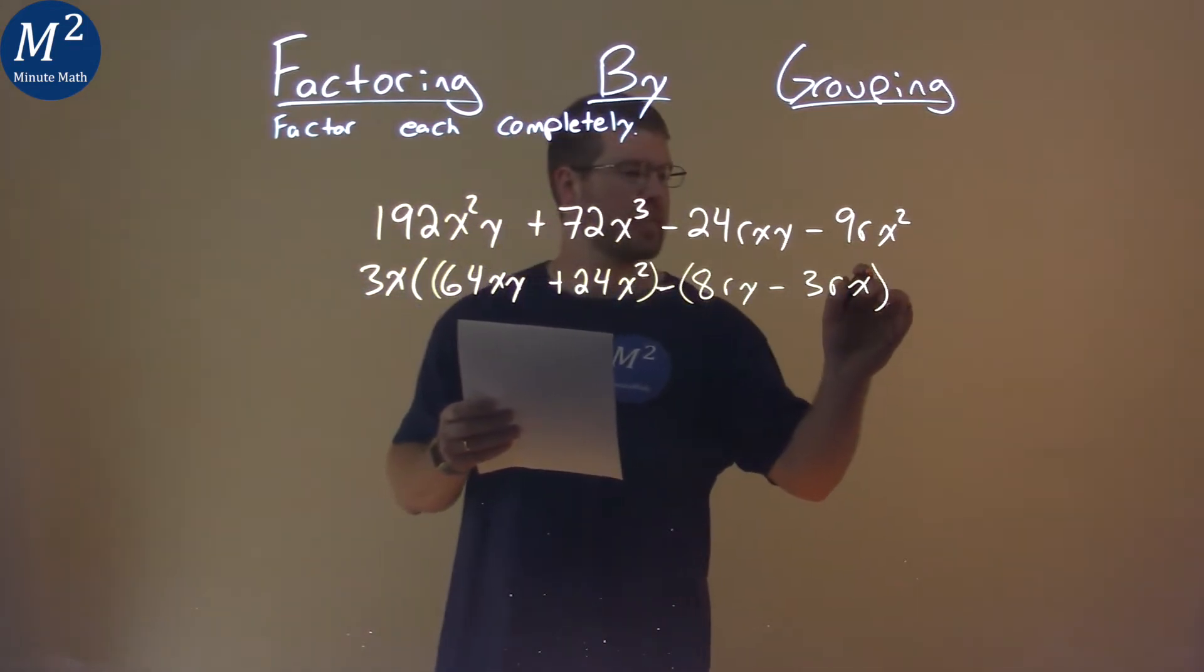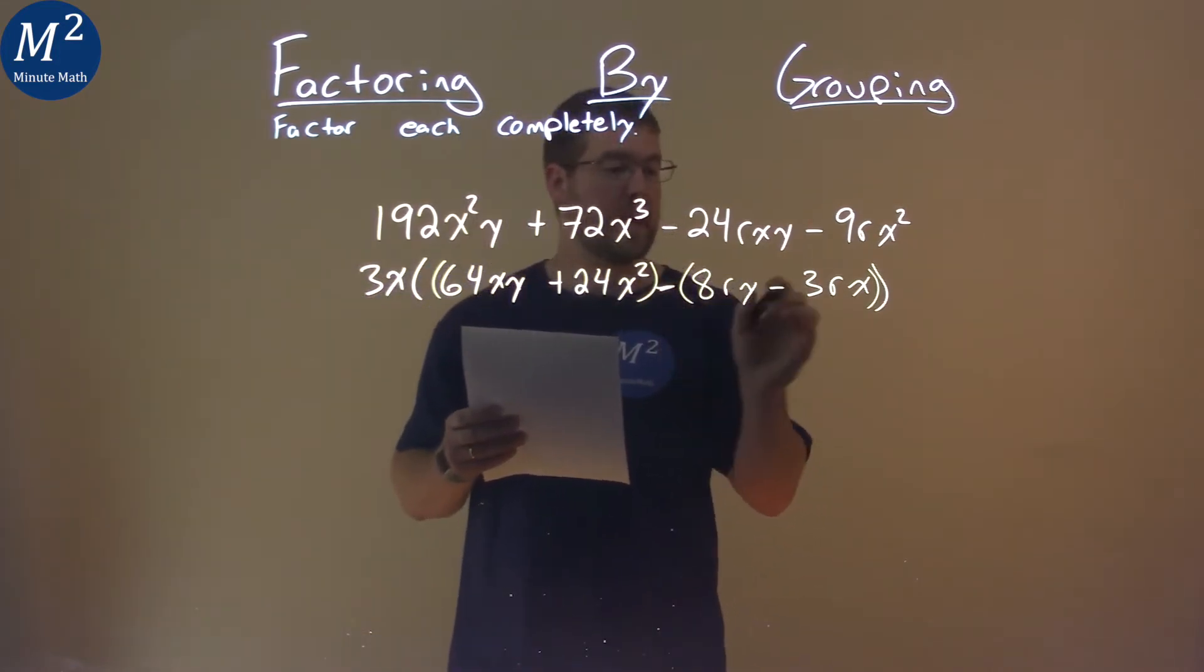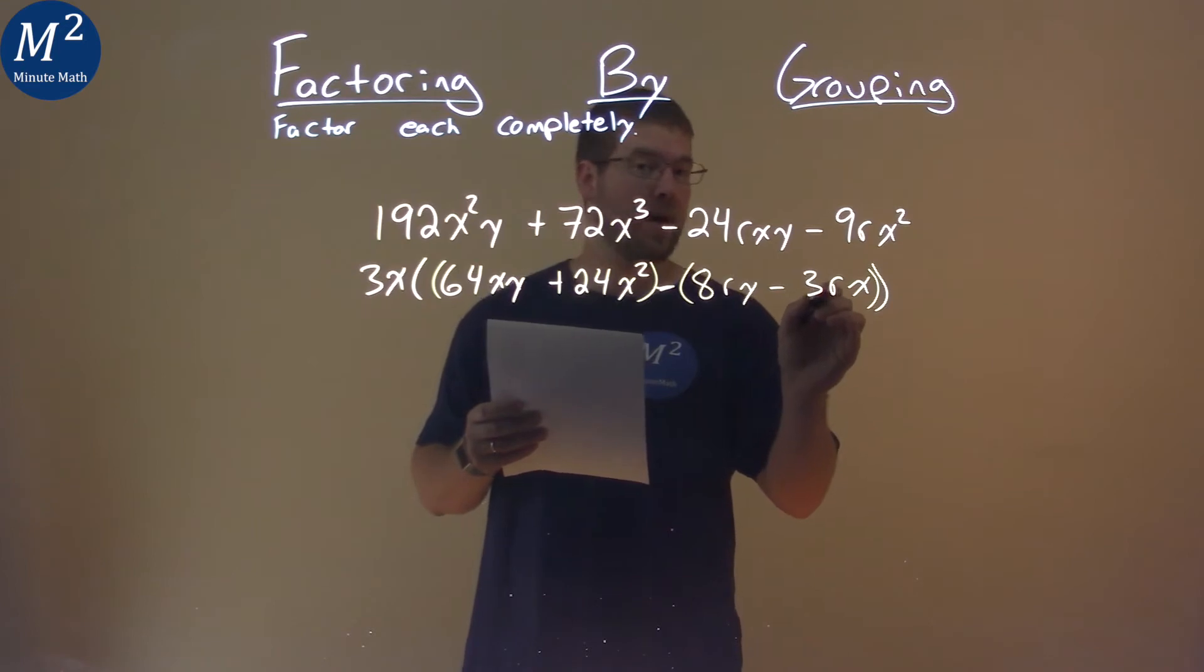Now this is going to be tricky. By doing that, this minus sign has to distribute to both parts. So to counteract, to keep this minus 3rx still there, I'll make that a positive.